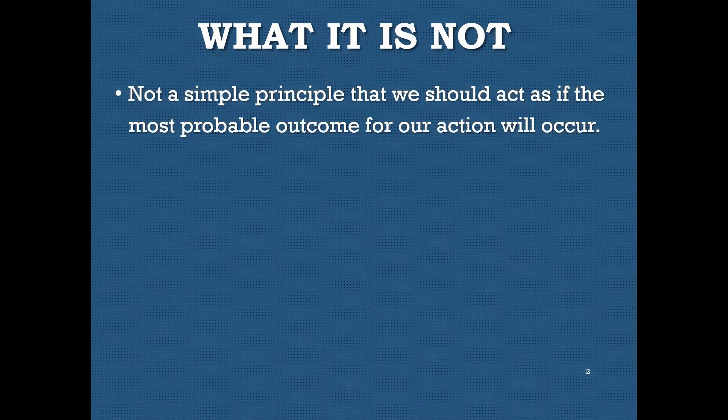To get started on decision theory, let's think about what it's not. What we're not doing is applying a simple principle that tells us we should act as if the most likely outcome — the most probable outcome for our action — will occur. That's not really decision theory. Some people act this way; they just act as if the most likely thing is going to happen and take an action based on that. But we'll see why that might be problematic.